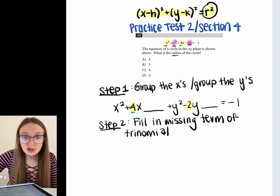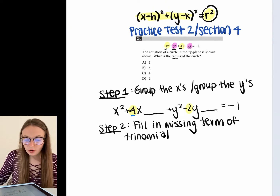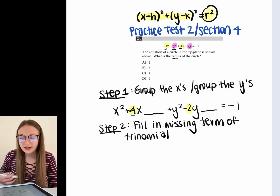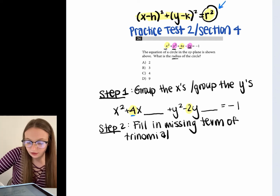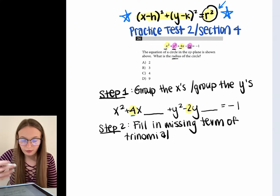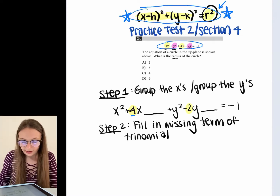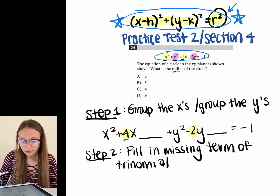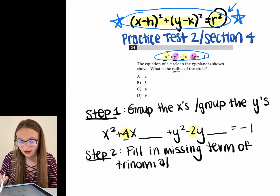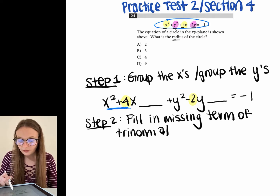Now let's talk about the procedure we're going to follow when we encounter a completing the square question on the SAT or ACT. They're asking us: the equation of a circle is shown — what is the radius? We know the radius appears in squared form in the circle equation, but right now this equation looks nothing like it, so we need to do some manipulation. The first step is to group the x's together and the y's together, since they're currently interspersed. So we have x squared plus 4x with all the x terms, and all the y terms together, plus the negative one that was already in the equation.